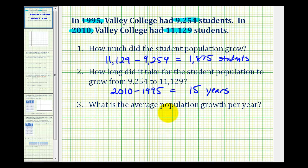Number three asks, what is the average population growth per year? The average population growth would be the ratio of the change of the population to the change in time in years. In this case, the change in population was 1,875 students, and the change in time was 15 years. So if we determine this quotient, it'll tell us the average population growth per year.